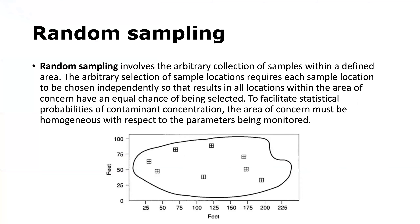Random sampling involves the arbitrary selection of sites within a defined area. For example, if the defined site is outlined in a boundary, you might have 8 sampling locations randomly selected at different coordinates. To use statistical probabilities of contaminant concentration, you must assume the area is more or less homogeneous with respect to the monitored parameters. This approach gives you a random sample of the area and allows you to make inferences about constituent concentration throughout the entire area.